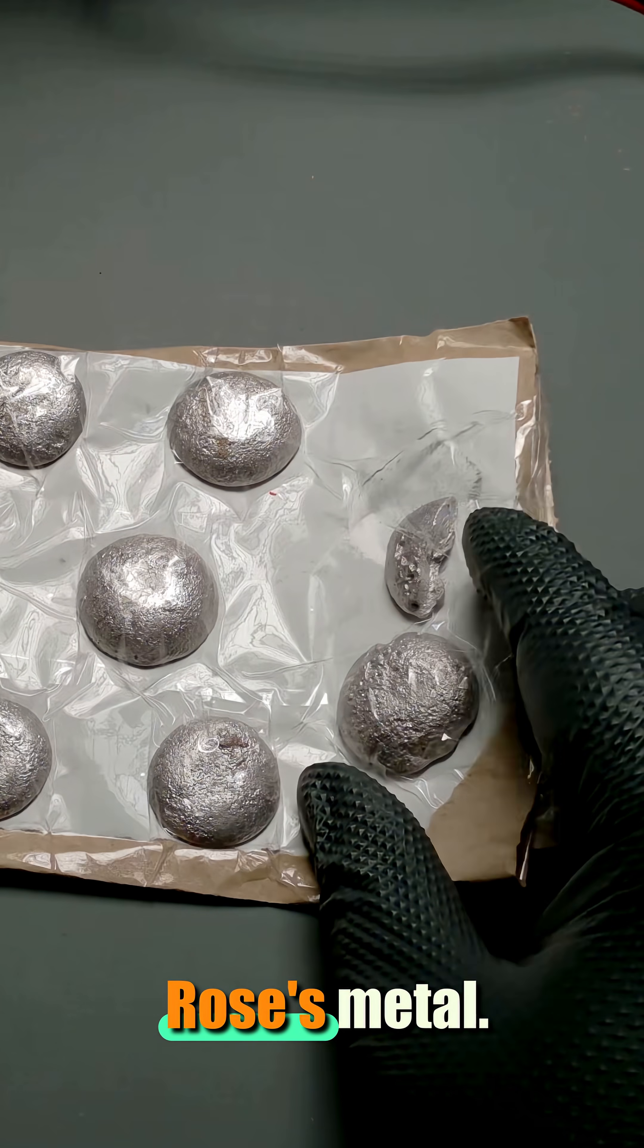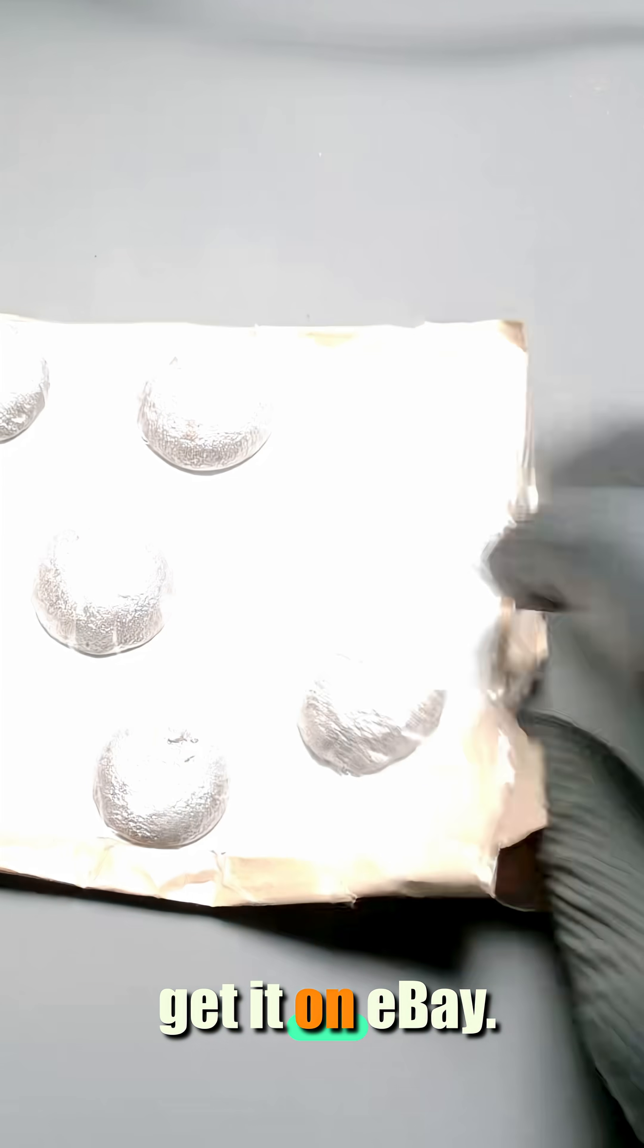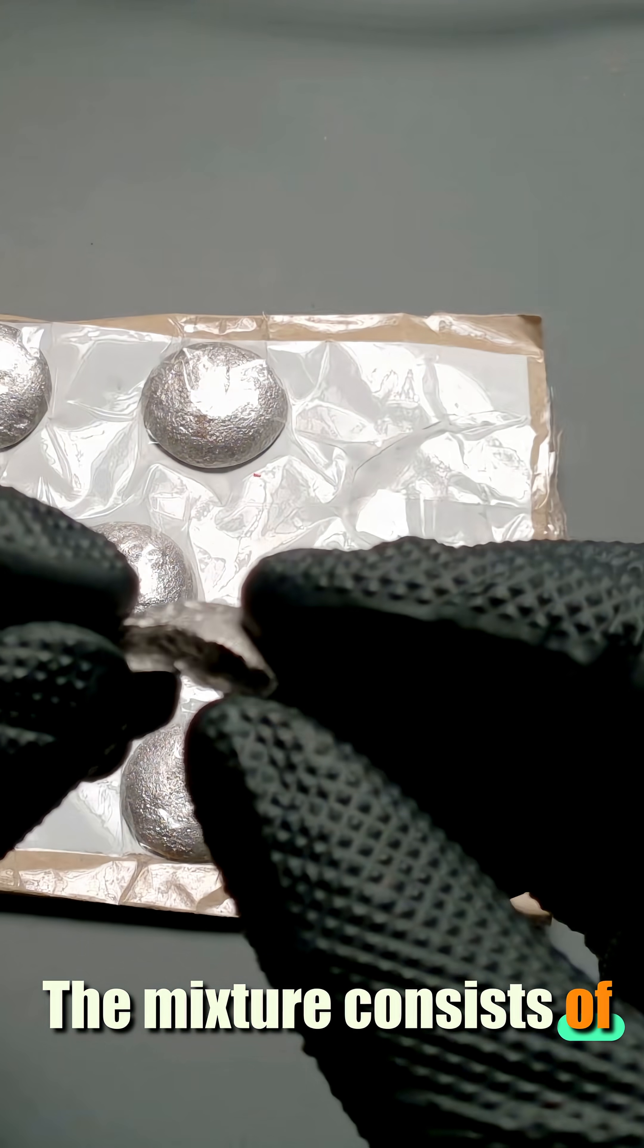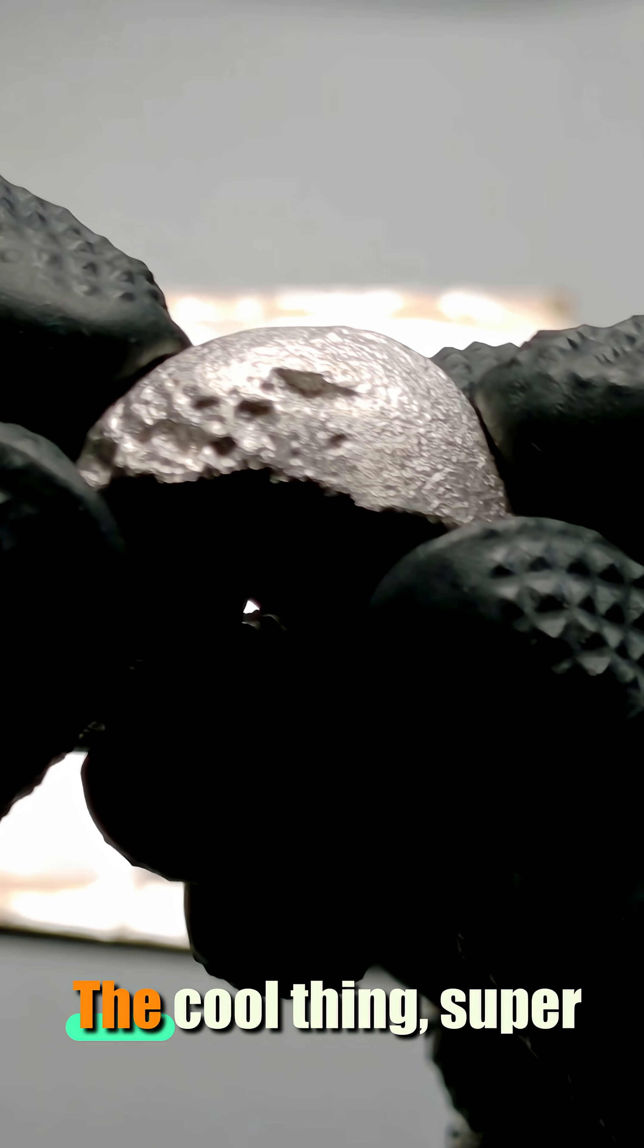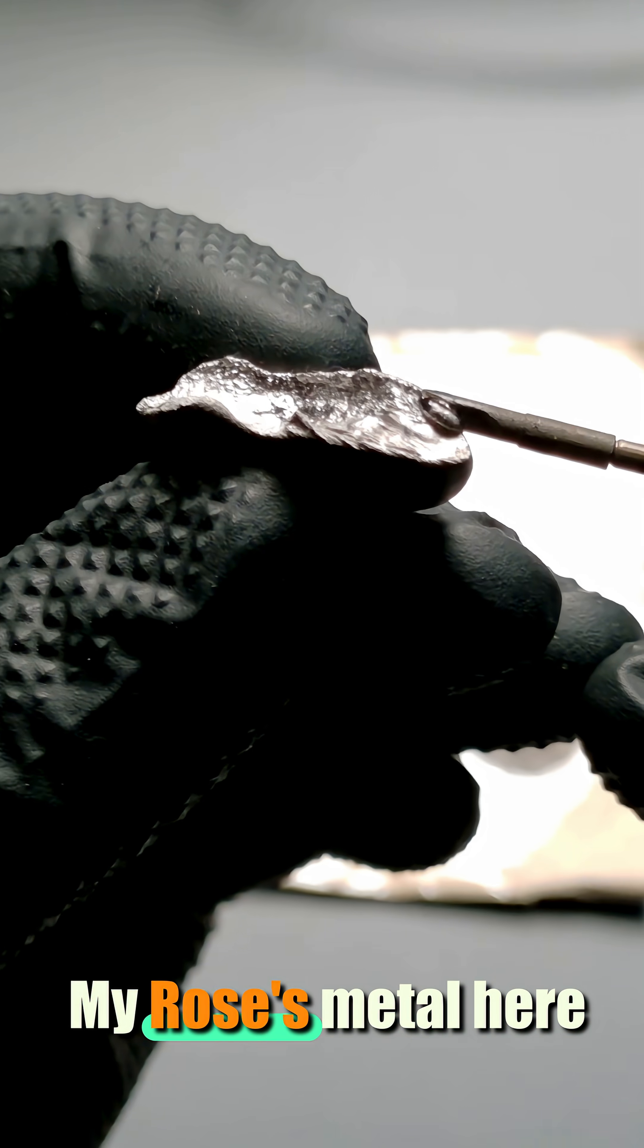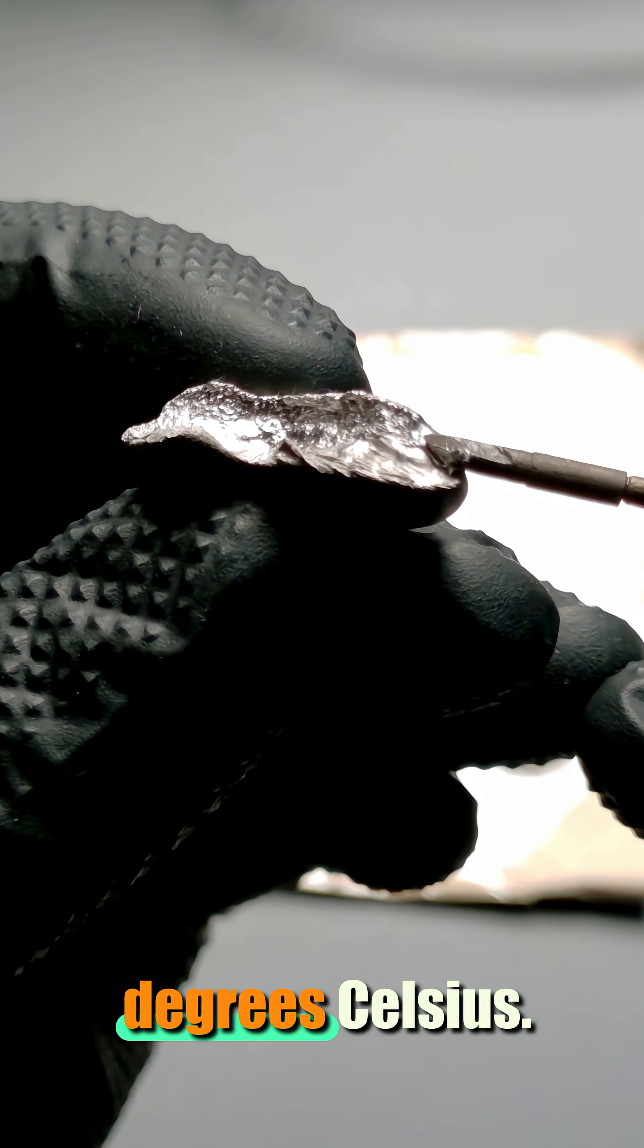This right here is Rose's metal. Sounds fancy, but you can easily get it on eBay. The mixture consists of bismuth, tin, and lead. The cool thing, super low melting point. My Rose's metal here melts at a mere 98 degrees Celsius.